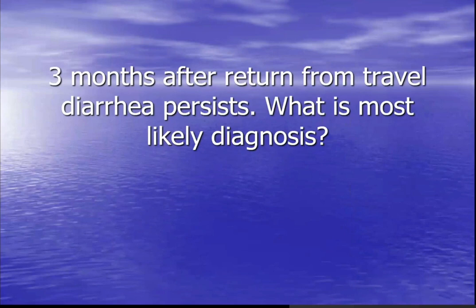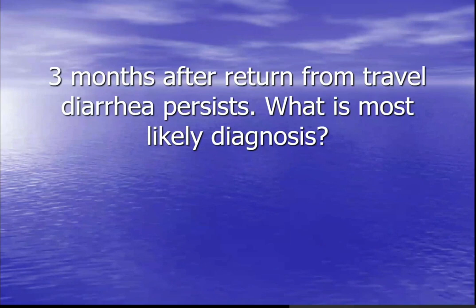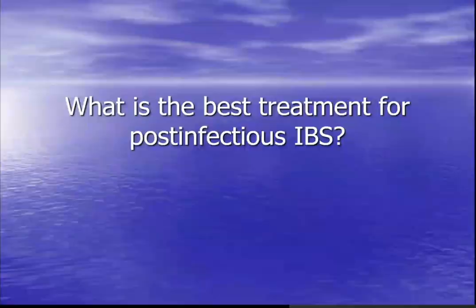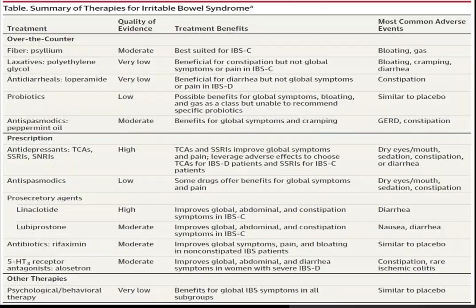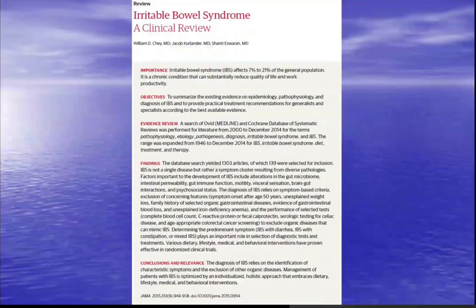If you return from travel and diarrhea is still persisting three months later, the most likely diagnosis is post-infectious irritable bowel syndrome, or IBS. The best treatments for post-infectious IBS, ranked by evidence, are: first, linaclotide; second, antidepressants; and third, peppermint oil and rifaximin. This is found in the JAMA Review 2015 article on IBS.